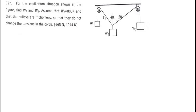So let us also see how we can crack this question which is also under static equilibrium. The question is saying for the equilibrium situation shown in the figure below, find W3 and W2. Assume that W1 is 800N and that the pulleys are frictionless so that they do not change the tension in the cords.